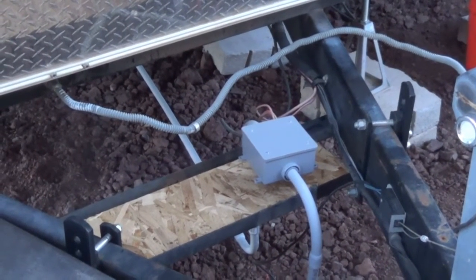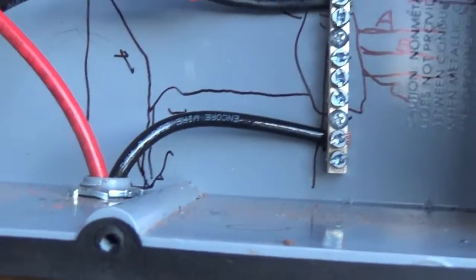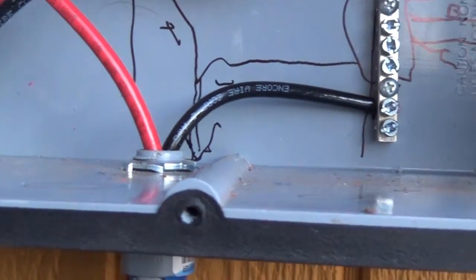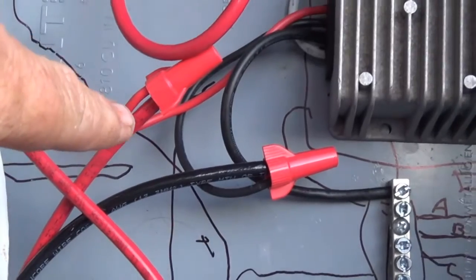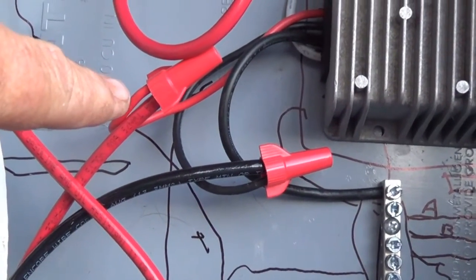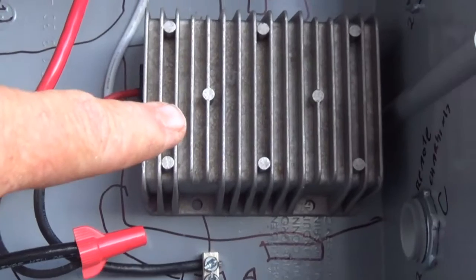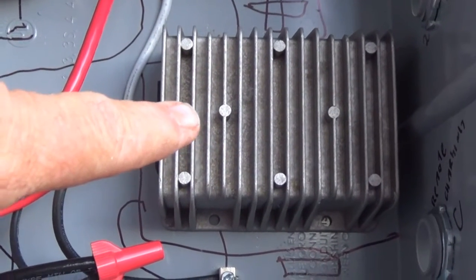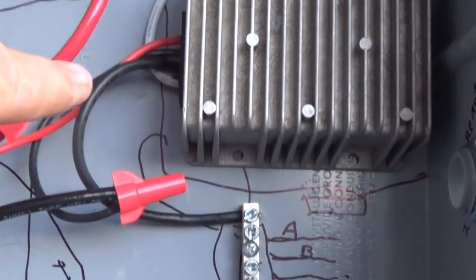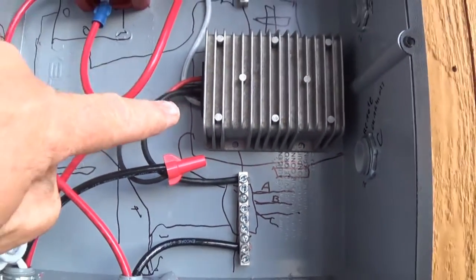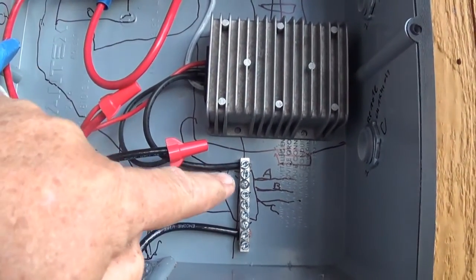So on this, I got 24 volts coming in. The 24 volts then is going to this converter, this is a 24 to 12 volt DC converter. Now this DC converter is coming over here to this distribution box on the negative.